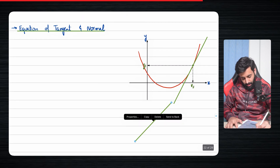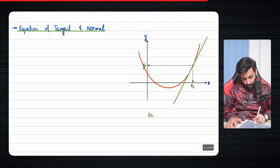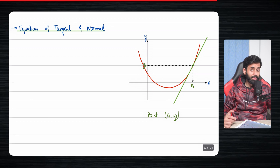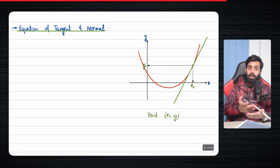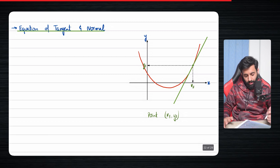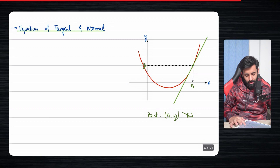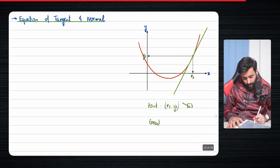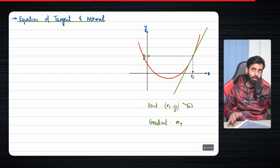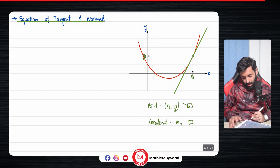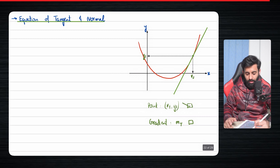In some cases you won't have the y-coordinate. To find it, you simply take the x-coordinate and plug it back into the equation of the curve. So the point box is sort of checked. What's still missing is the gradient — I'll call it m_t, where m is for gradient and t is for tangent.